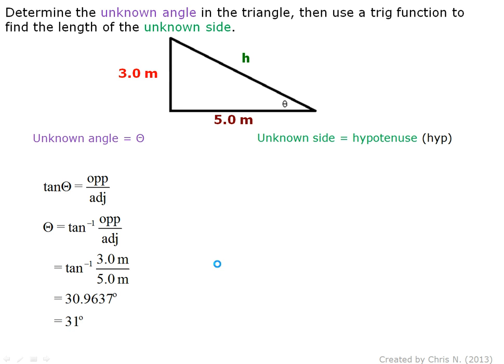Now that we have the angle theta, we can solve for the unknown side, which is also the hypotenuse of the right triangle. To solve, we can either use the sine function, opposite over hypotenuse, or the cosine function, adjacent over hypotenuse.